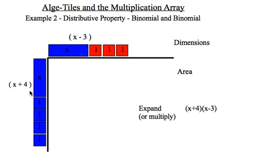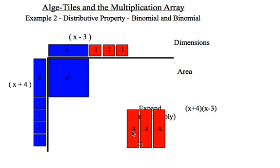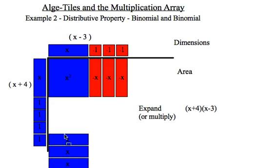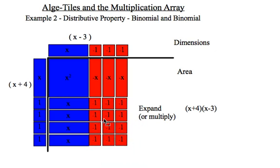When I multiply x by x, I get x squared. x times negative 1 would be negative x, and I'll have to do that calculation three times. 1 times x would be positive 1x, and again I'm repeating that four times. And lastly, 1 times negative 1 is negative 1, and I have to repeat that 12 times.